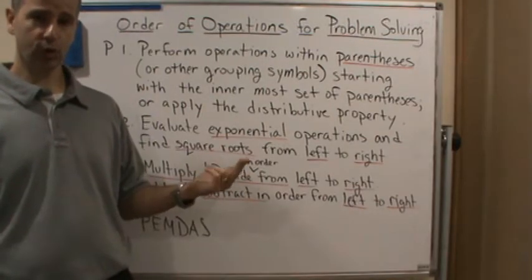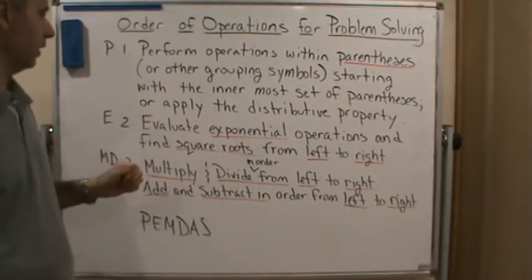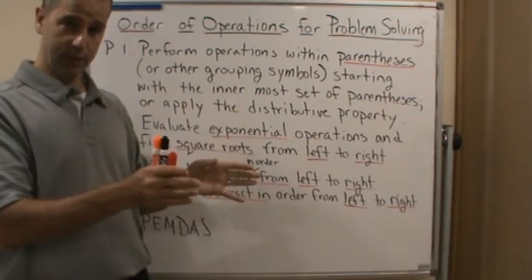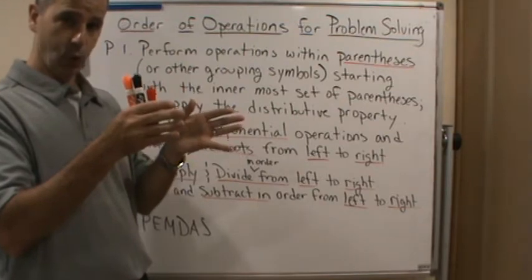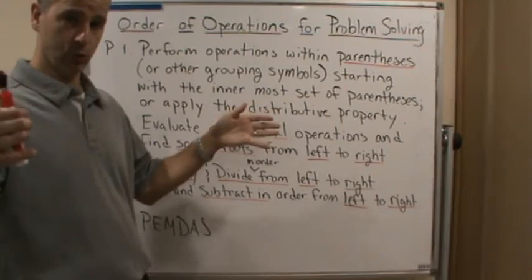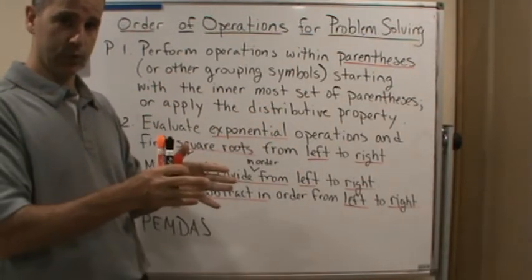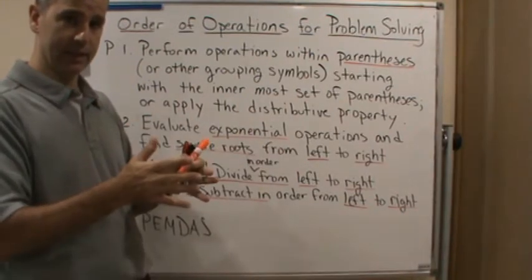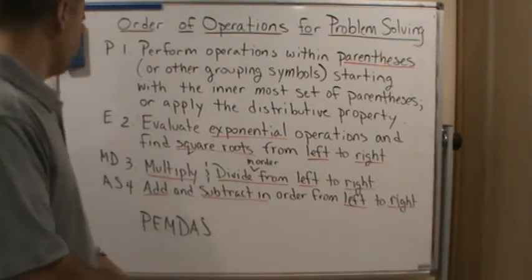So anything that's a grouping symbol that's grouping things together, you want to do first. And the way you work with them, you work with the innermost parentheses, and you either simplify it or use the distributive property. So that's first.